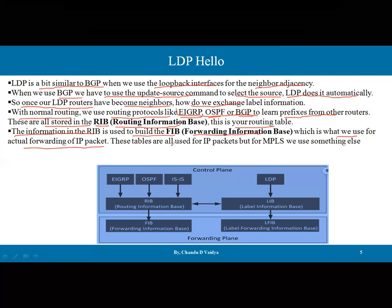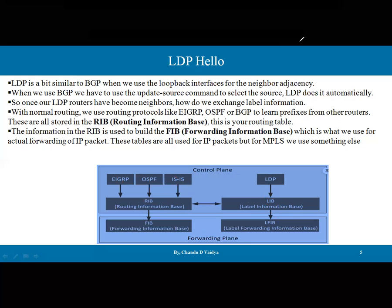These tables are used for IP packets, but for MPLS we use something else. In the control plane, protocols like EIGRP, OSPF, and ISIS populate the RIB, which is passed to the FIB for forwarding. But for LDP, instead of the RIB, we have the LIB — label information base — and this is then passed to the LFIB — label forwarding information base. MPLS and LDP work on labels, not routing tables, which makes forwarding much more time-efficient.